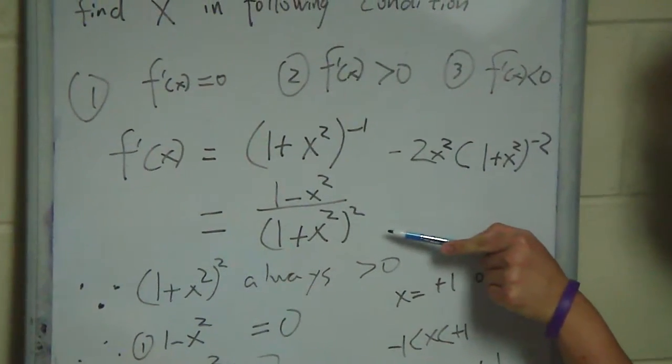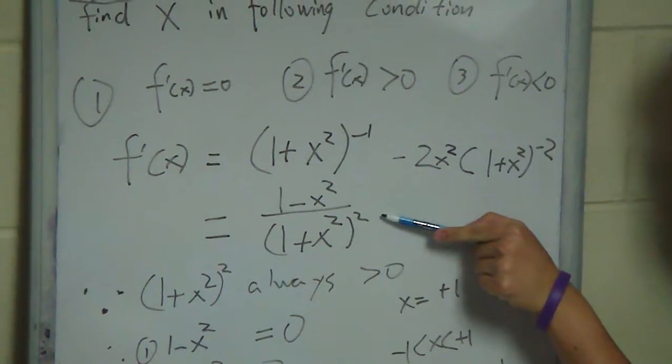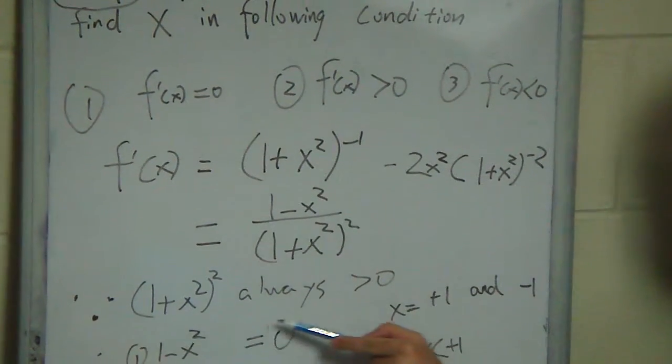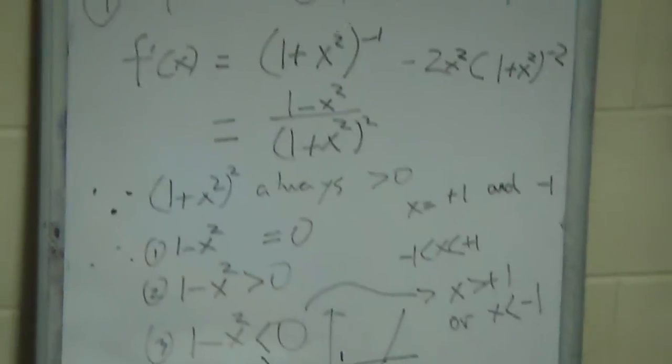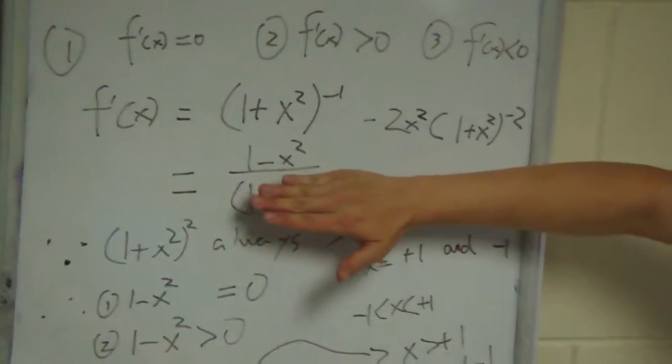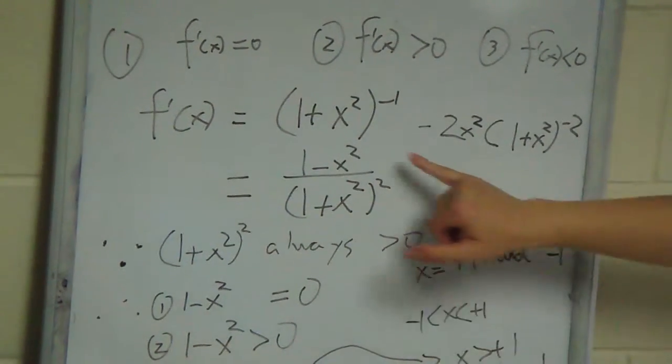When we look at this function, we can see the denominator has a square here, which means this will always be greater than 0. So basically we do not need to consider the denominator, we only need to consider the numerator.